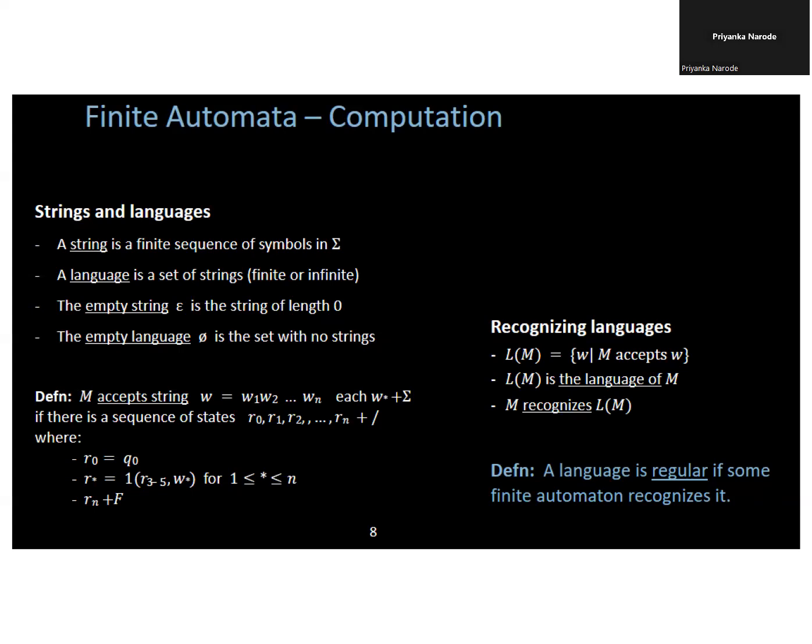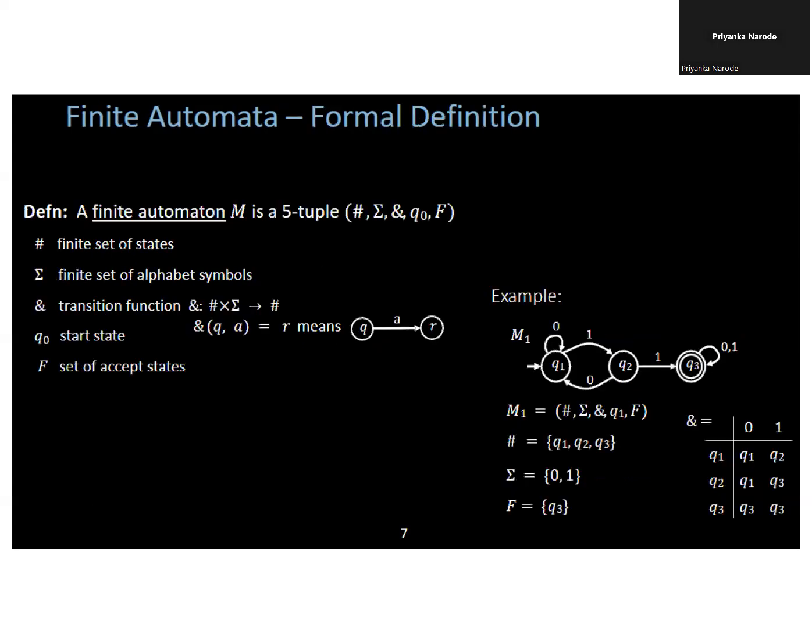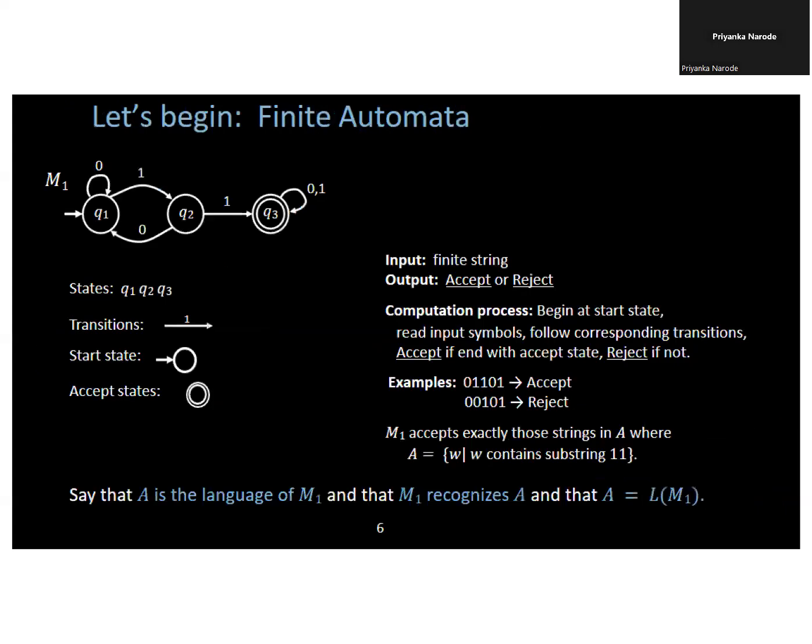The next slide shows an example of finite automata. This diagram shows the input is a finite string. What is the finite string? The finite string is 01101. This is accepted by the machine. The machine is nothing but your finite automata. Automata is a machine. You learn this in SPOS subject, system programming and operating system.